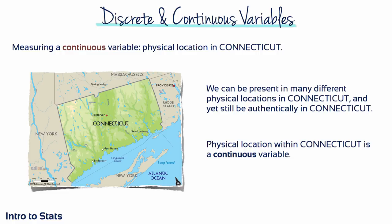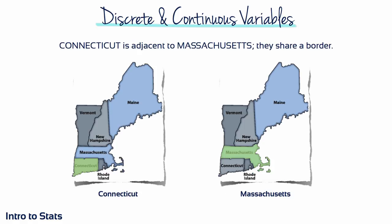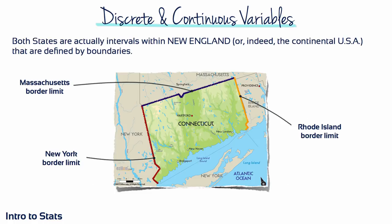Let's look at this concept in terms of physical location in Connecticut. We can be present in many different physical locations and still be authentically in Connecticut — physical location within Connecticut is a continuous variable. One person can be in North Haven, one in Mystic, another in Danbury, yet all three are genuinely within Connecticut. Connecticut is adjacent to Massachusetts, and both states are actually intervals within New England defined by boundaries. Although physical location is continuous, the category we call Connecticut is a fixed interval defined by the New York, Massachusetts, and Rhode Island borders.